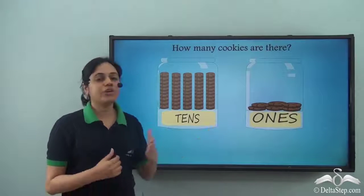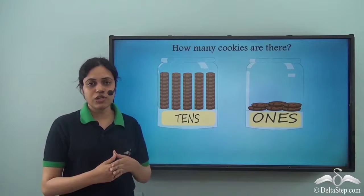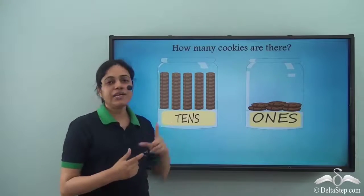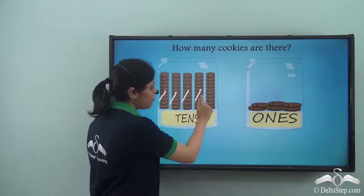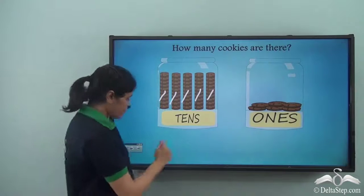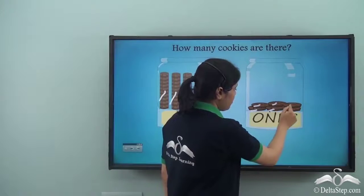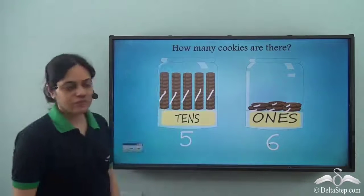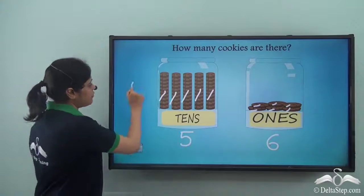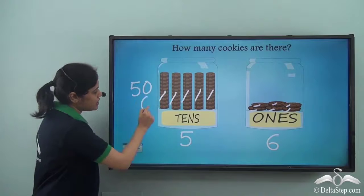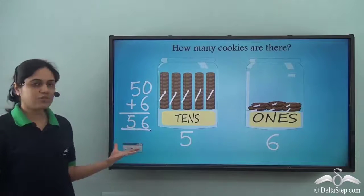Now can you tell me how many cookies are here, even without counting? I know that each pile contains ten cookies or represents one tens, so let me count the number of piles: one, two, three, four, five. There are five piles, which means five tens. And how many single cookies? One, two, three, four, five, six — six single cookies. So five tens and six ones. Five tens is fifty and six ones is six, so fifty plus six gives us fifty-six cookies.